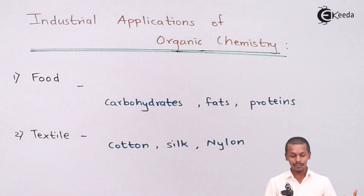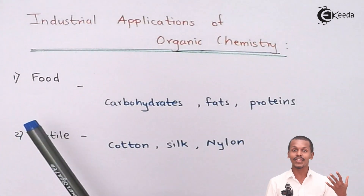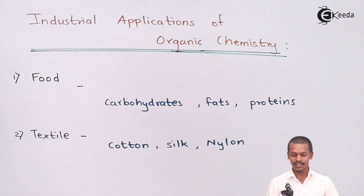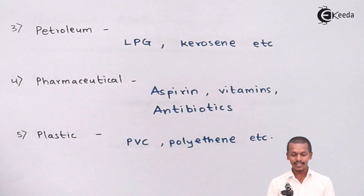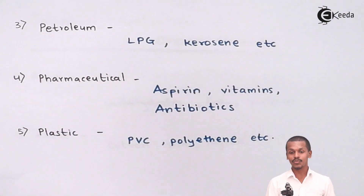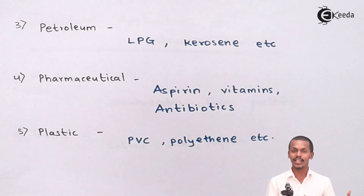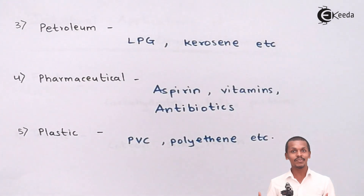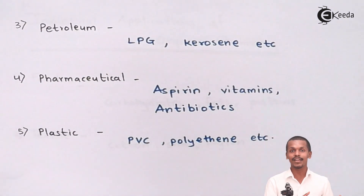Food and shelter are required for us to survive. Talking about petroleum — petroleum comes in various types: LPG, kerosene, and CNG. These compounds, which are necessary for us to survive, are basically organic compounds. This helps us understand how organic compounds play a very vital role in our life.